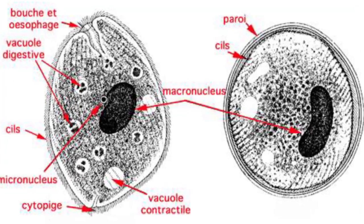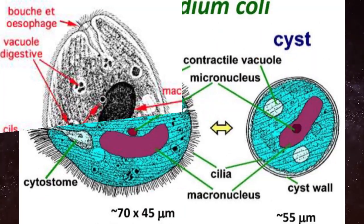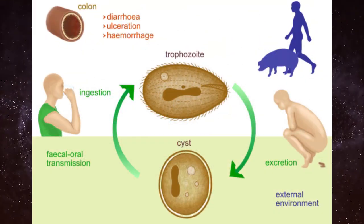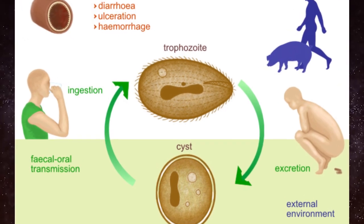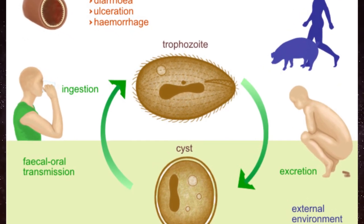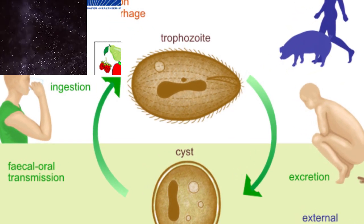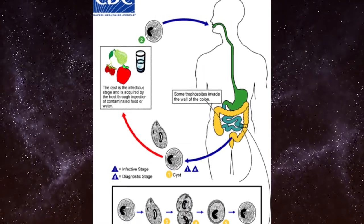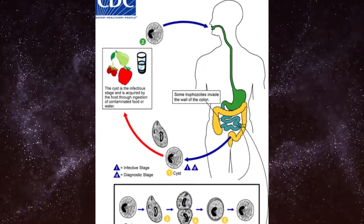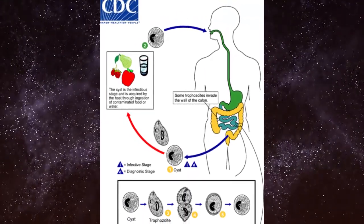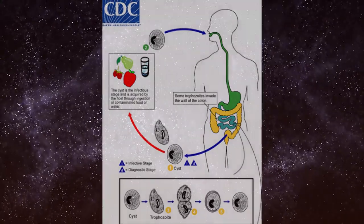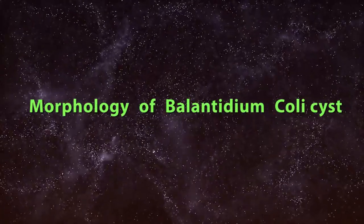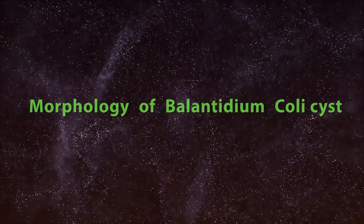Balantidium coli is a protozoan parasite belonging to the phylum Ciliophora, the members of which possess cilia in at least one stage of their life cycles. It has both the trophozoite and cyst forms as part of its life cycle. The cyst form is the infective stage. In this video, I am going to discuss with you the morphology of Balantidium coli cyst.